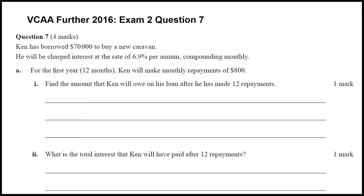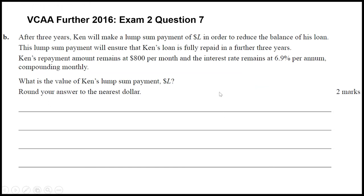This was the last extended response question in exam 2 on finance, worth 4 marks. It's about Ken borrowing $70,000 to buy a caravan. For part A1, worth 1 mark, we need to find the amount he will owe after he's made 12 repayments. For part A2, we're asked about the total interest he would have paid in those 12 repayments. Then part B asks about him making a lump sum payment of some unknown amount L, which we'll need to find.